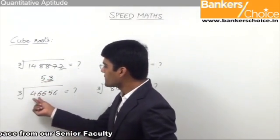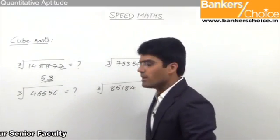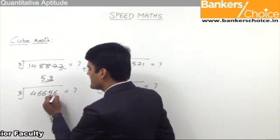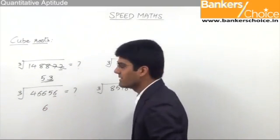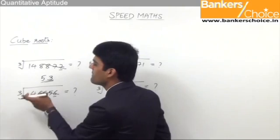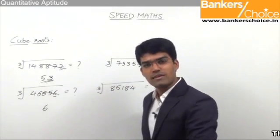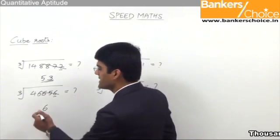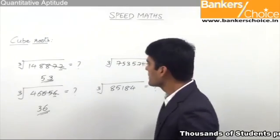The next number is 46656. When a number ends with 6, the cube root ends with 6. Leave the last three digits; less than 46 and a perfect cube is 27, which is 3 cubed. So 36 is the answer.